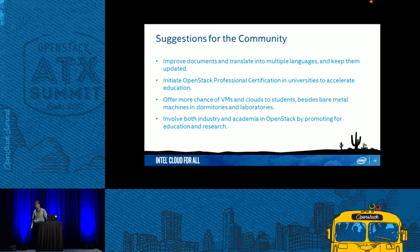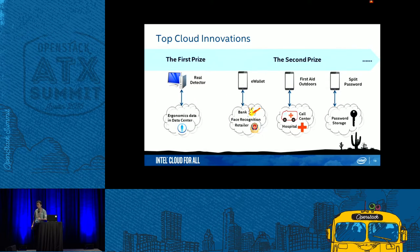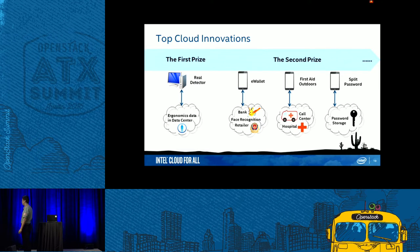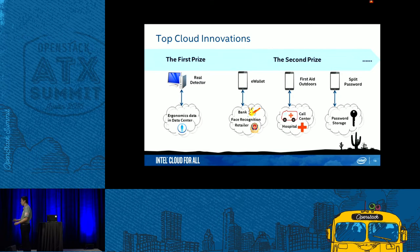The last section introduces some of the applications they created. The first prize winner built a real-sense detector — they use the cloud to collect behavioral data from users in front of a desktop and analyze ergonomic data to send warnings and provide posture suggestions to desktop users. They leveraged the cloud for data analysis and collection.